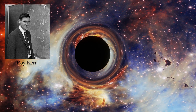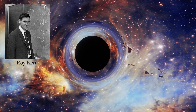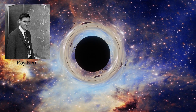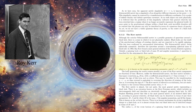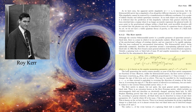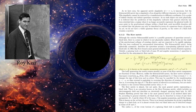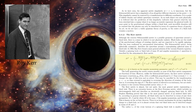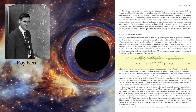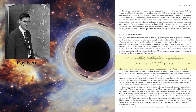Spinning black holes are described by the Kerr solution to Einstein's equation. It was discovered by the New Zealander Roy Kerr in 1963, and it describes the shape of space-time around real-world rotating black holes. The Kerr solution tells us that the radius of the event horizon depends on the rate at which the black hole spins, but it is always between a half and one times the Schwarzschild radius.